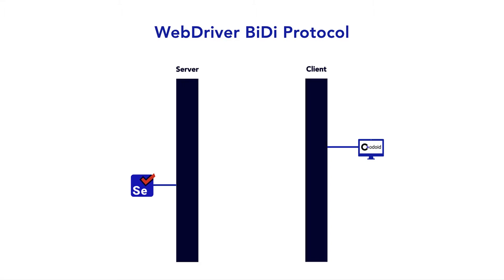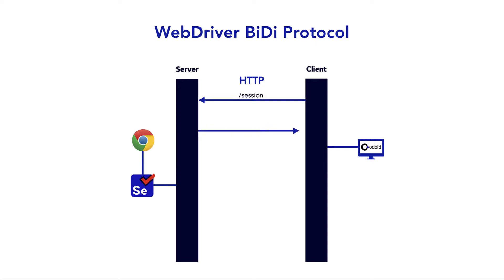Let us see an example. Selenium WebDriver has more than 60 plus endpoints to communicate with the server — for example, session creating request endpoints and even sending commands. All those requests go to the server and then the server responds to the client request. If the client sends an HTTP request to the session endpoint, the server receives it, Chrome driver initializes a new browser session, and responds with a session ID. This is how the Selenium client and server communicate over HTTP protocol.